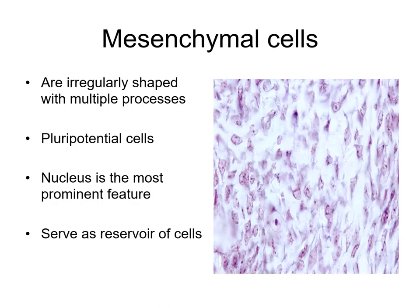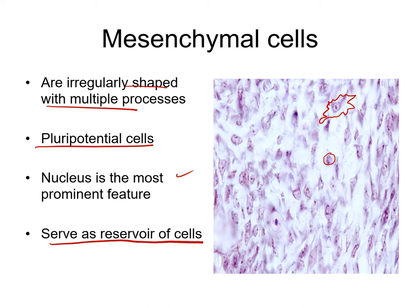Mesenchymal cells have an irregular shape with multiple processes. They are pluripotential cells — they can proliferate and differentiate into any other cell type. The most prominent feature is their nucleus; we can barely see the cytoplasm. They serve as a reservoir of cells. As mentioned, 5% of these cells are found in the adult and most are used in stem cell research.